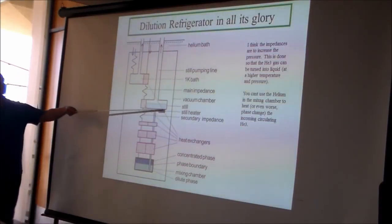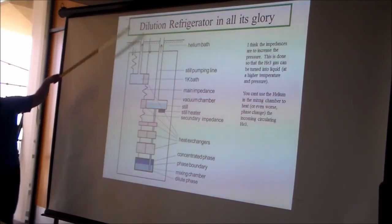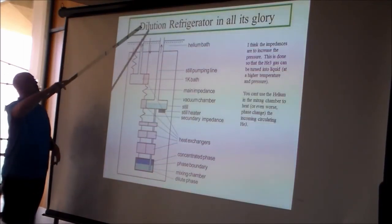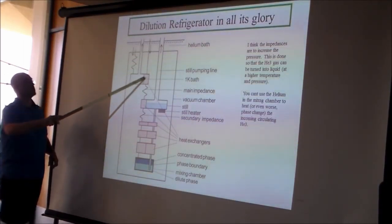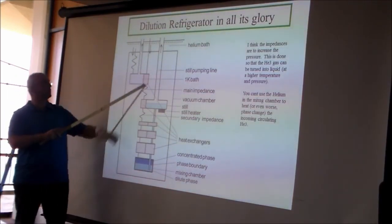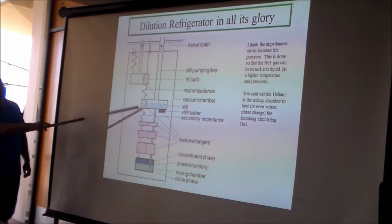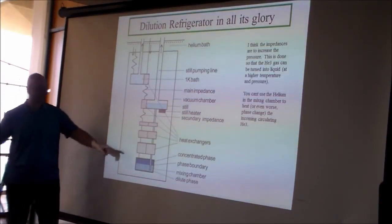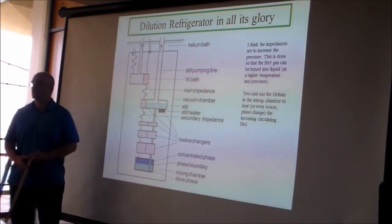The still cools slightly due to evaporation, so a small heater keeps it at 0.7 Kelvin. The helium-3 vapor travels up and out of the cryostat, passes through a nitrogen trap at room temperature, re-enters at 1.3 Kelvin through the 1K pot, flows into the still at 0.7 Kelvin, and passes back through all the heat exchangers to re-enter the concentrated phase — completing the cycle.